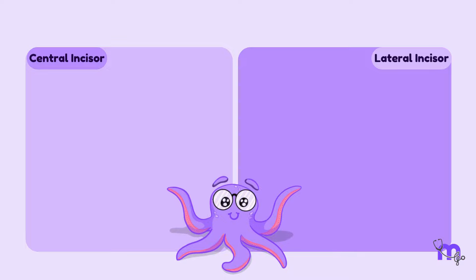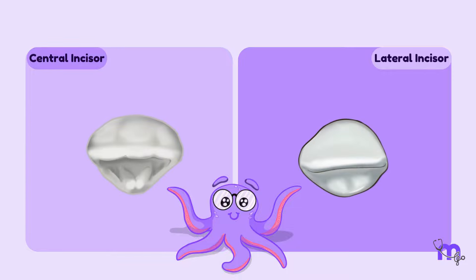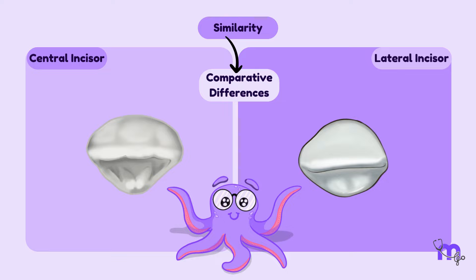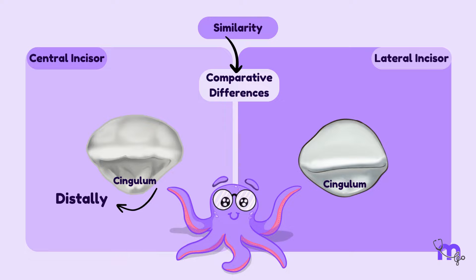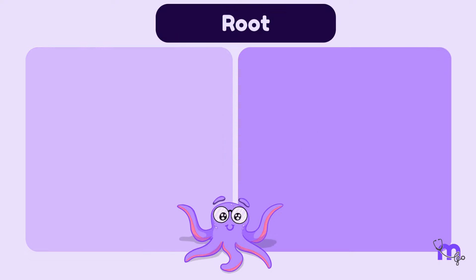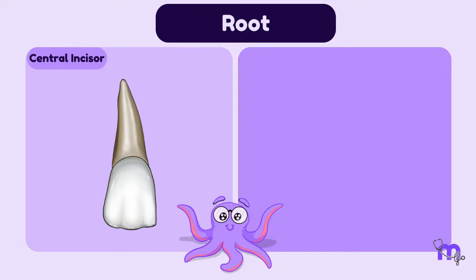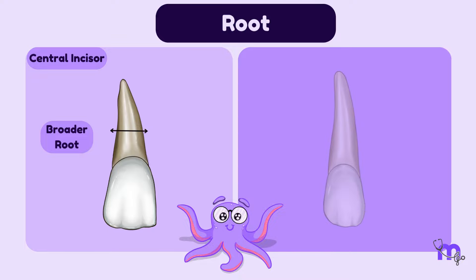When observing these teeth from the incisal aspect, we find a striking similarity in their overall appearance with a few comparative differences. A key distinguishing factor is the position of the cingulum, which is placed more distally in the central incisor. Lastly, let us examine the roots. The root of the central incisor is notably broader when compared to that of the lateral incisor. Perhaps the most remarkable distinction lies in the root structure, particularly the presence of a distal tilt in the apical third of the root in the maxillary lateral incisor.